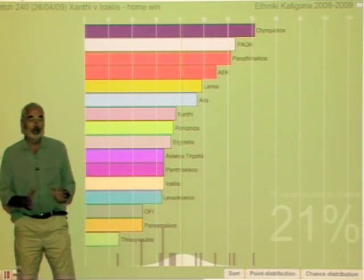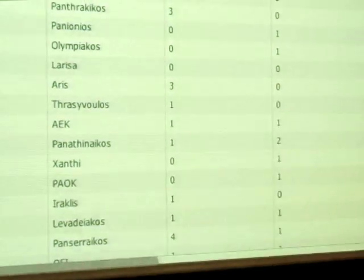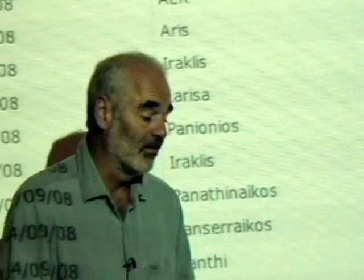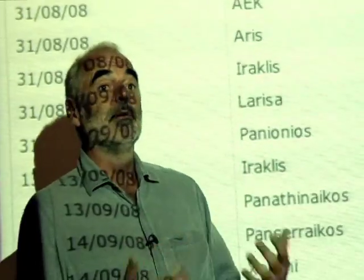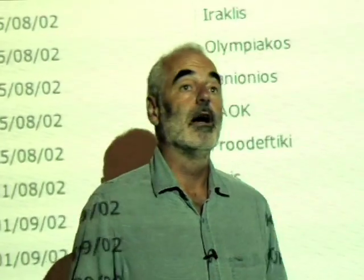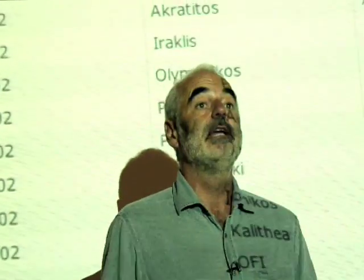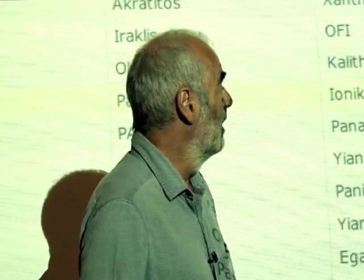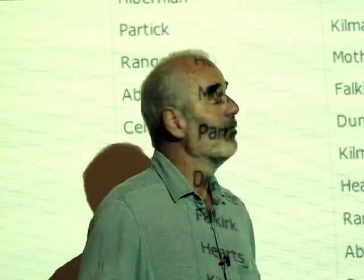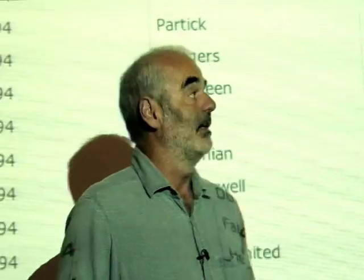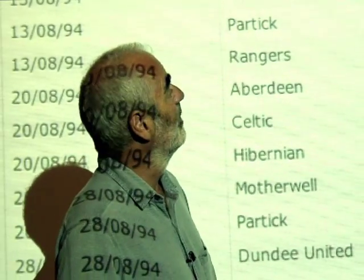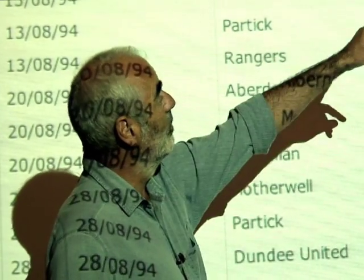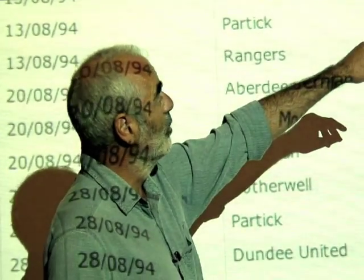Not all leagues are like that. In some leagues you see substantial variability just due to luck — the teams are very even, and sometimes it looks like there's no difference at all between the teams. A nice example is Scotland in 2002.